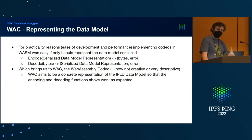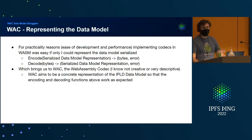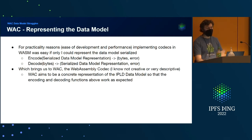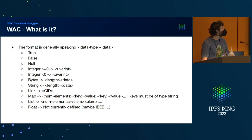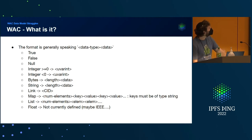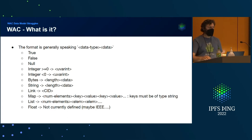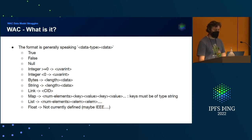Which brings us to WAC, which is supposed to be a concrete implementation of the data model so that encoding and decoding functions work just as they would if you weren't trying to serialize the data model. I largely stole this format from Michael's simple DAG proposal from a while ago. Basically it's a token for the data type and then the data. We have true, false, integer, negative integer, bytes, strings, links, maps, lists, and floats.